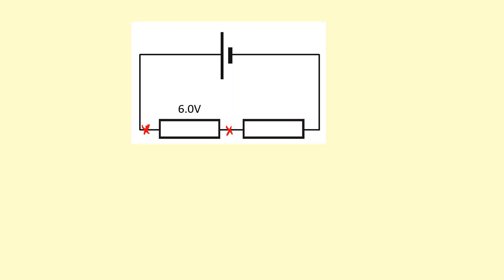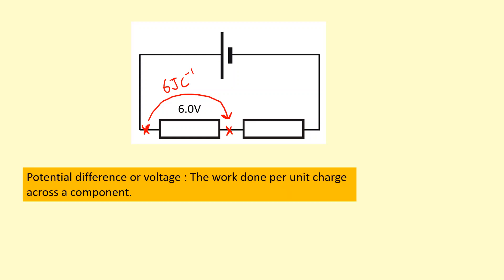The potential difference is 6 volts. What does that mean? It means that each coulomb of charge that goes from this point to this point will gain 6 joules of energy. So 6 joules of energy will be gained or lost by each coulomb of charge that goes across that point. The formal definition is potential difference or voltage...